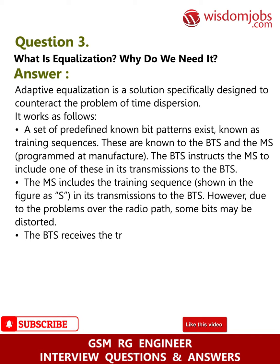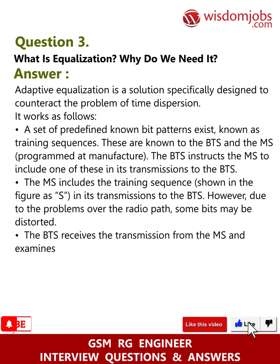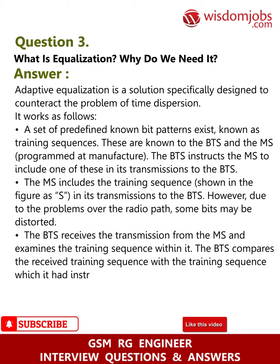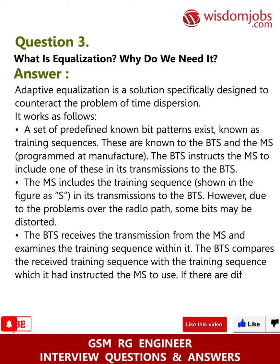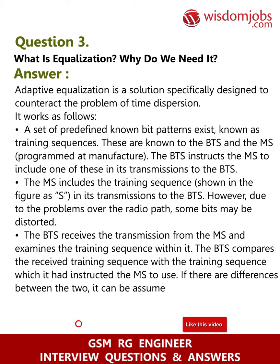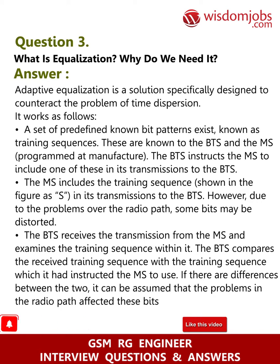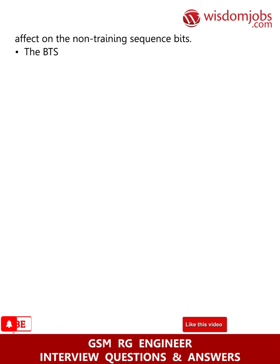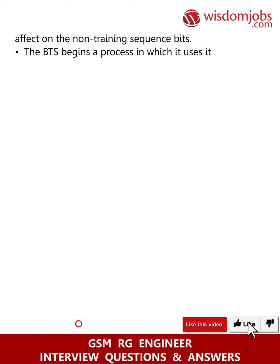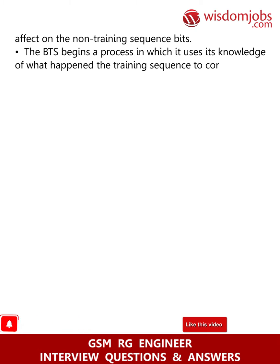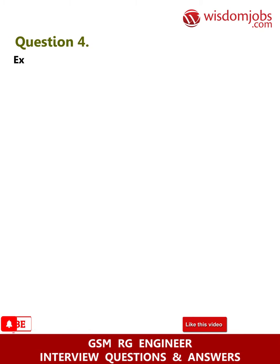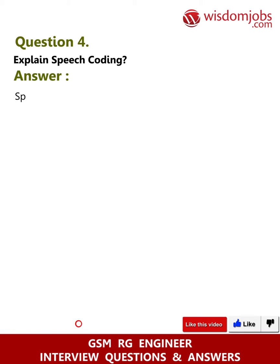However, due to problems over the radio path, some bits may be distorted. The BTS receives the transmission from the MS and examines the training sequence within it. The BTS compares the received training sequence with the one it had instructed the MS to use. If there are differences, it can be assumed the radio path affected those bits similarly on the non-training sequence bits, and the BTS uses this knowledge to correct the other bits.